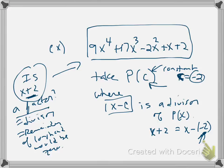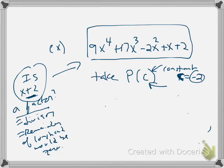See, your constant is negative 2. So, all right, let's do it. You'll see what happens. Let's take the polynomial function and evaluate it at negative 2 and see what happens.